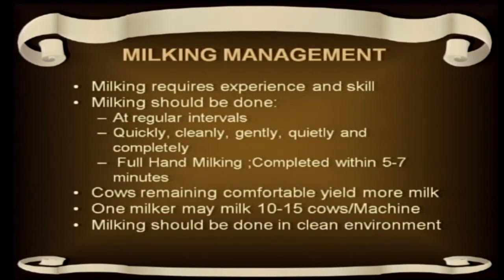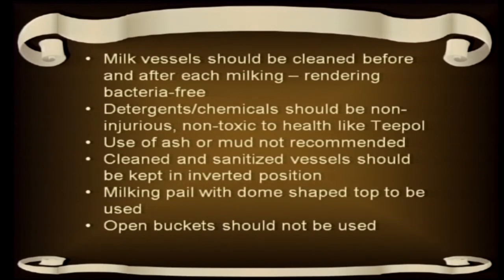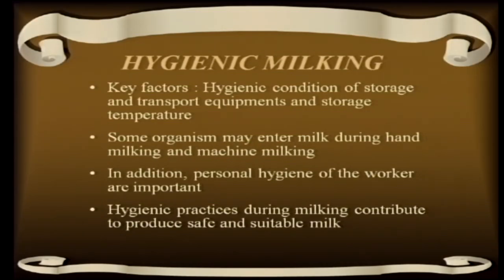Milking management is very important. Milking should be done at regular intervals, quickly, cleanly, and gently using full-hand milking. It should be completed within 5 to 7 minutes, and normally one milker may milk 10 to 15 animals, or a machine can be used — but it should always be done in a clean environment. The cleanliness of milking equipment and utensils is very important because residual milk in containers creates high chances of microbial growth. Thermoduric organisms are typically found in milk cans, and psychrotrophics in bulk and storage tanks. Proper cleaning to remove germs and dirt is essential. The milk pail should be cleaned, then detergent and chemicals used, then sanitized. A milk pail with a dome-shaped top should be used — open buckets should not be used — and it should be put in an inverted position to dry.